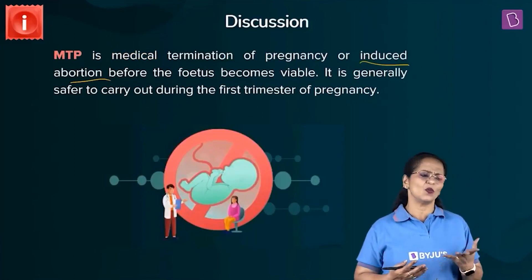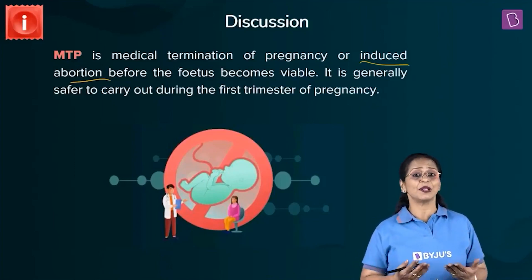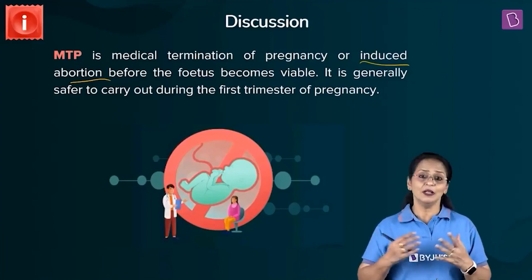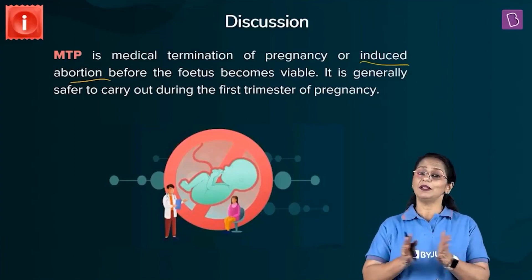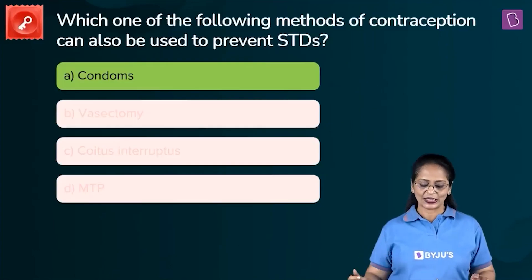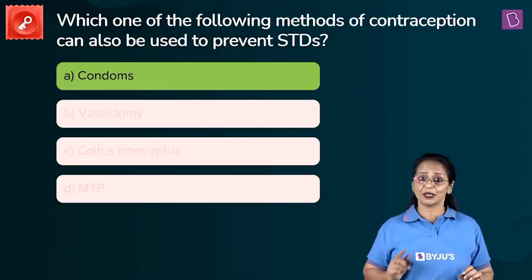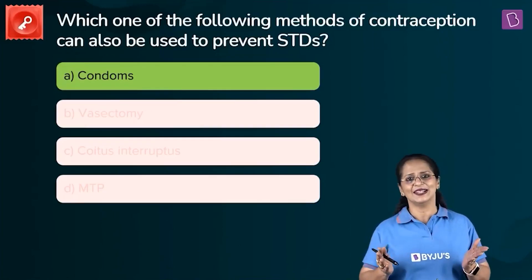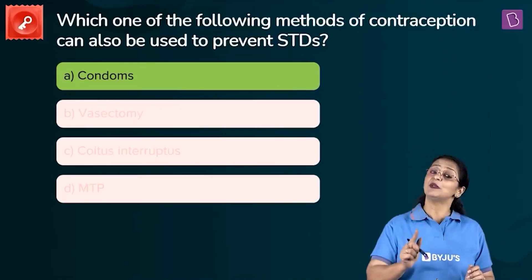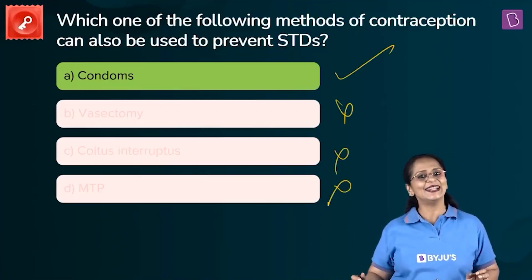Vasectomy and coitus interruptus prevent pregnancies, but not STDs. MTP — medical termination of pregnancy, also called induced abortion — is conducted typically during the first trimester. It does not help in preventing STDs. So, of these contraceptive methods, only condoms also prevent STD transmission. The answer is A — condoms. We eliminate B, C, and D.